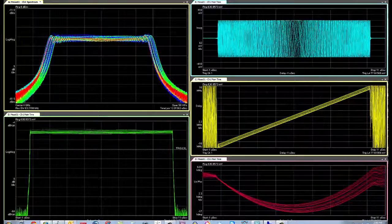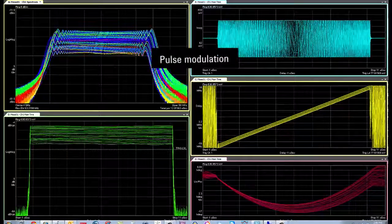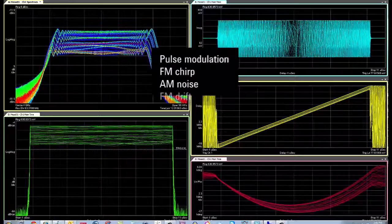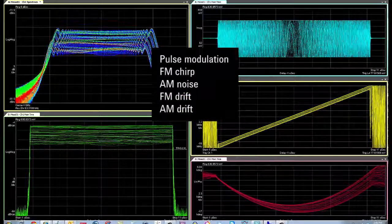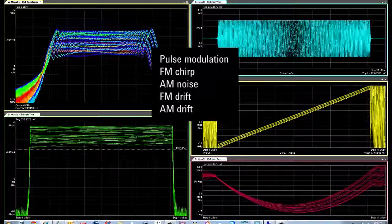Go ahead and turn that on. And so now what you're seeing is a composite signal. We have pulse modulation with an FM chirp. We have AM noise. We have FM drift. We have AM drift. There you have it, five function generators running in parallel all inside of one instrument.